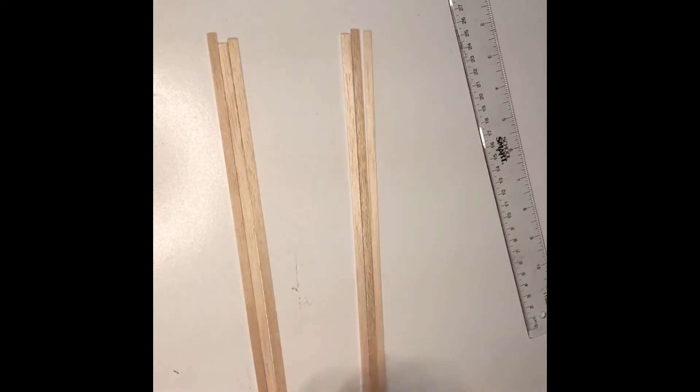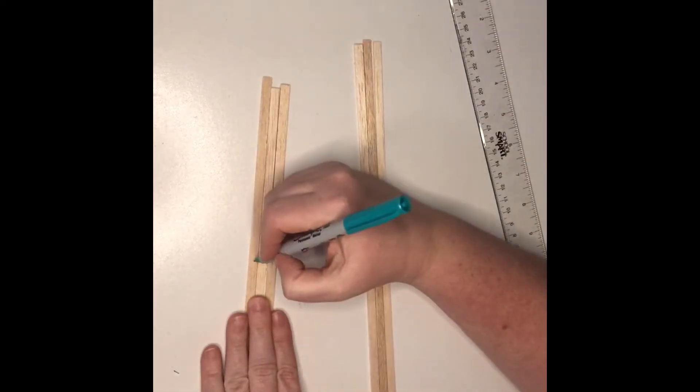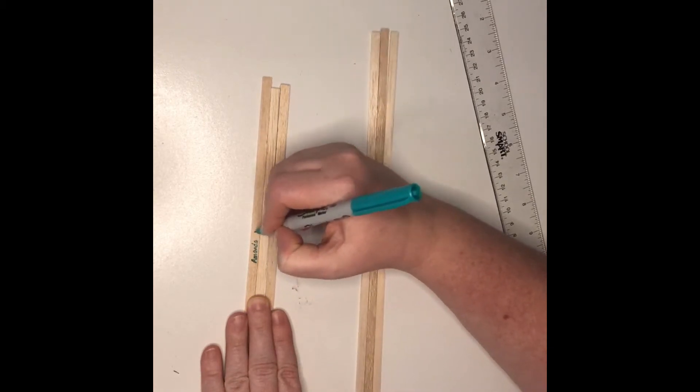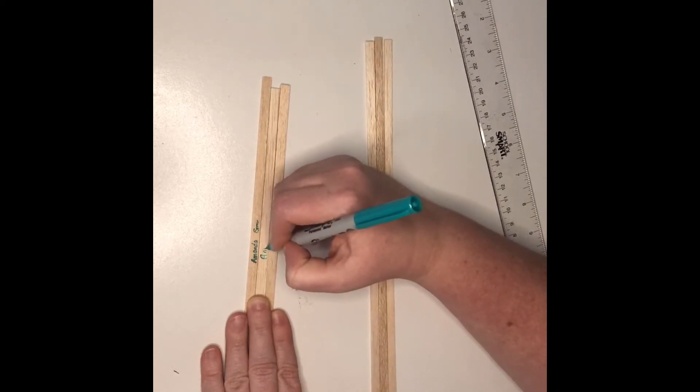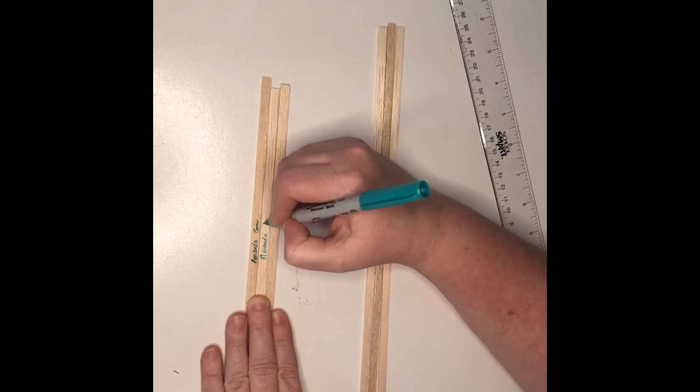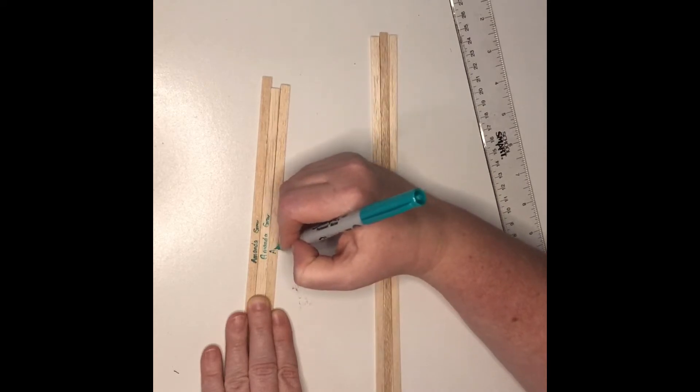First thing you need to do is write your name using a pen or a Sharpie on all of your beams or sticks. First name and last name on all sticks, because you don't want anybody to claim your beam.